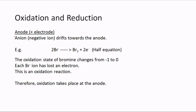The anode is a positive electrode, and the anions, or negative ions, drift towards the anode. For example, if we have a solution containing bromide ions (Br-), at the anode the Br- will produce bromine (Br2) plus two electrons. This equation is what we call a half equation for electrolysis.